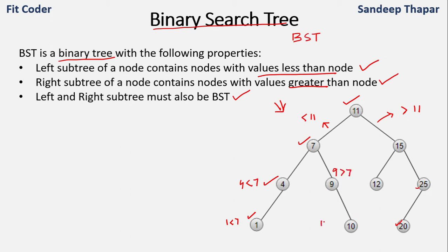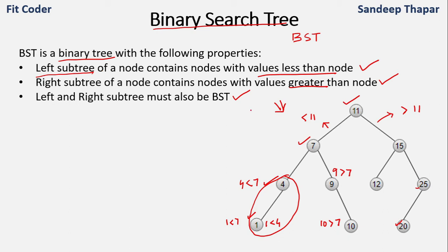The last property says the left and right subtrees must also be a BST, so this property should hold for all nodes. For node 7: values 4 and 1 are on the left and are less than 7; value 9 on the right is greater than 7. And for node 4, value 1 is less than 4 on the left side.